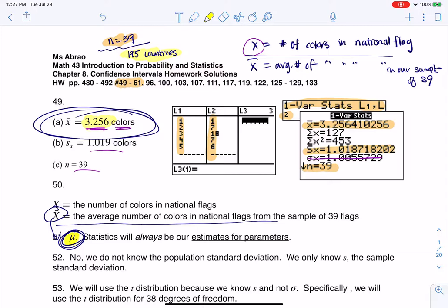So what I mean by this is we know x bar is 3.256, but I don't know what mu is. The only way to find mu is if I actually went through and I sampled all 195 countries, then I could find mu, but I didn't do that, or at least the book didn't do that. So we're going to try and make our best guess for mu. Based on the sample, if the sample mean is about 3.256, I bet mu is close to that. I don't think it's up at like 18 or something like that. So stats will always be our estimates for these parameters. And it asks in number 52, do you know sigma? Do you know sigma, which is the population standard deviation?